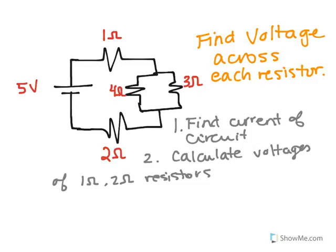So the approach that I'm going to use to solve this problem is to find the current of the full circuit, which requires us to find the equivalent resistance of the entire circuit, and then use Ohm's Law along with the voltage of the battery to find the total current. Then I'm going to use Ohm's Law to find the voltages of the 1 ohm and 2 ohm resistors.